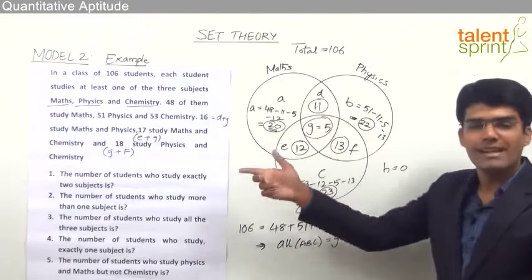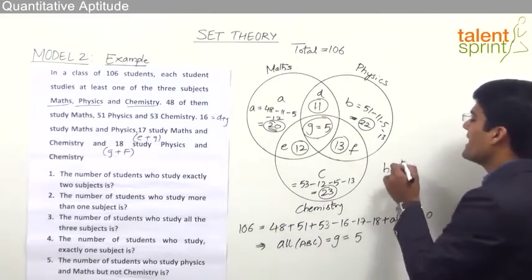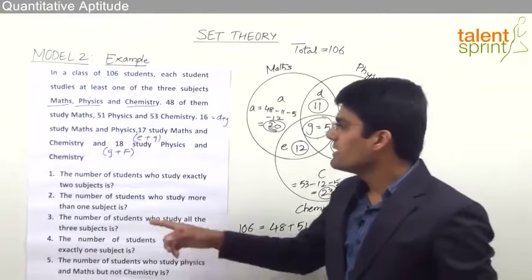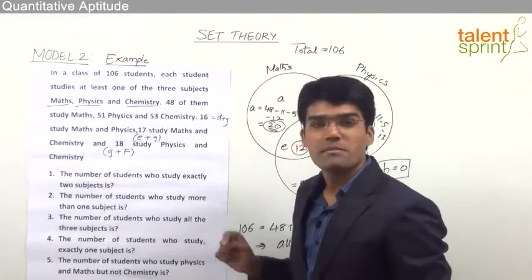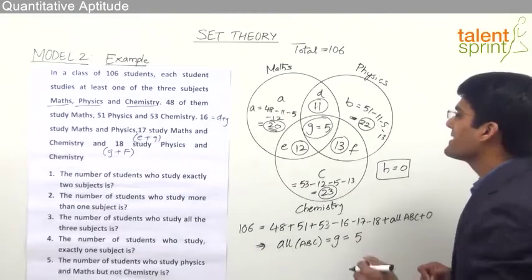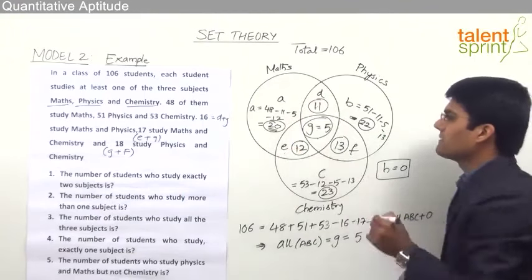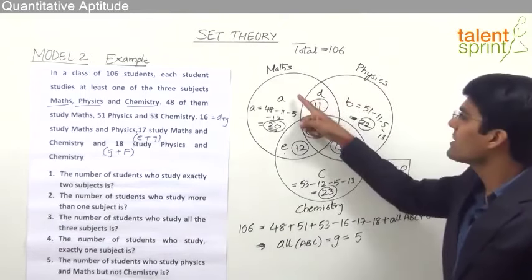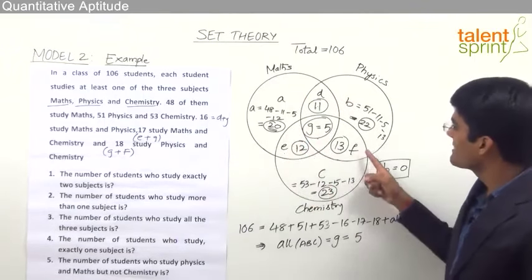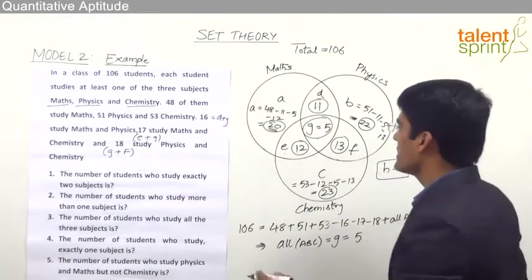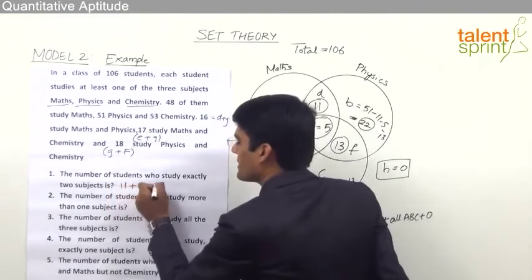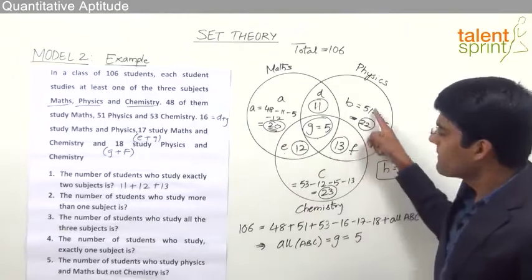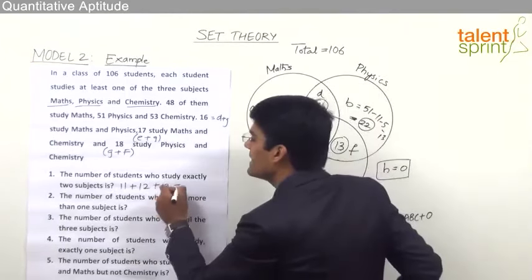Now we can quickly answer all 5 questions. Question 1: the number of students who study exactly 2 subjects is represented by regions D, E and F. D represents Maths and Physics only, E represents Maths and Chemistry only, and F represents Physics and Chemistry only. So the answer is 11 + 12 + 13 = 36. Therefore, 36 students study exactly 2 subjects.